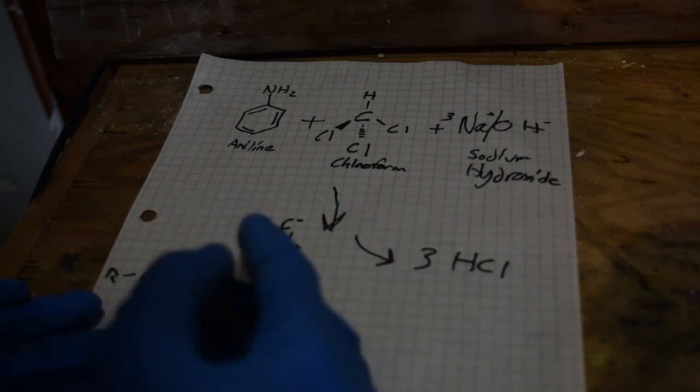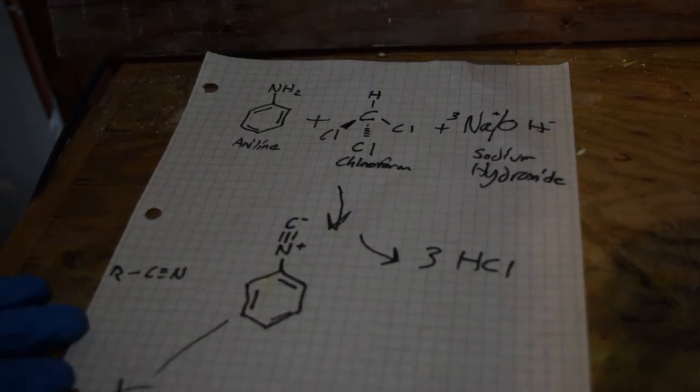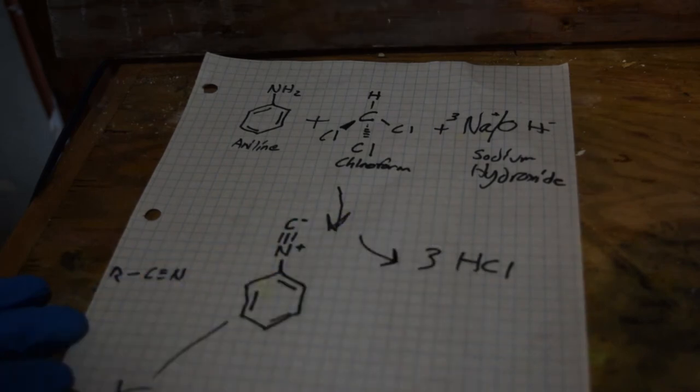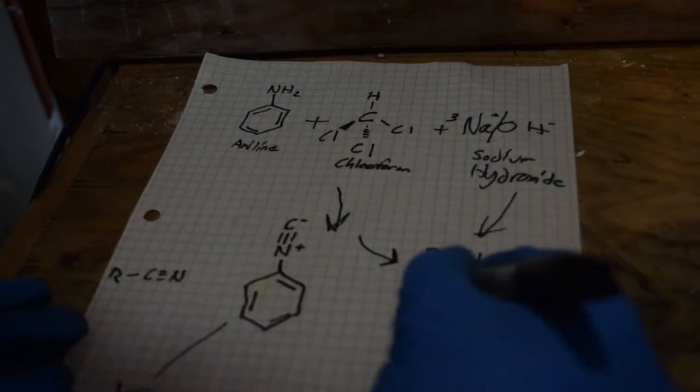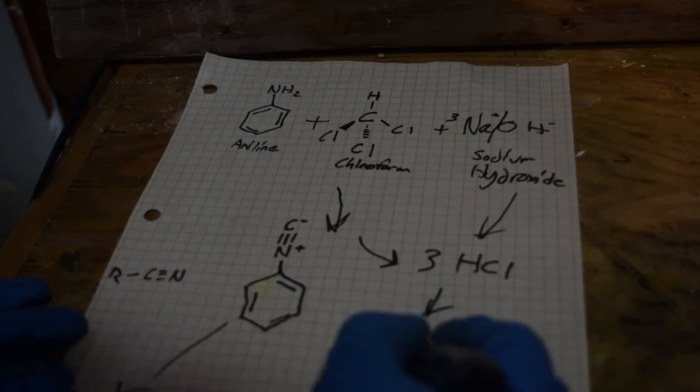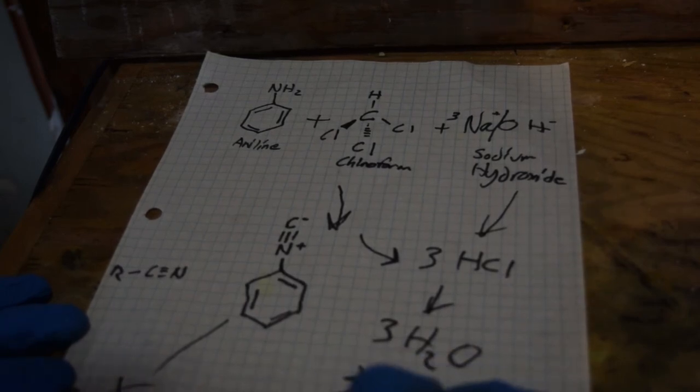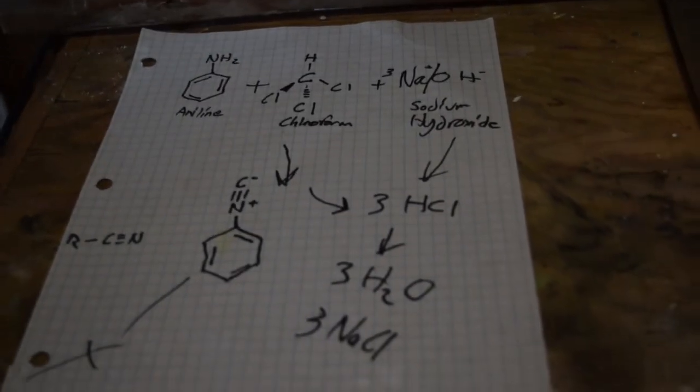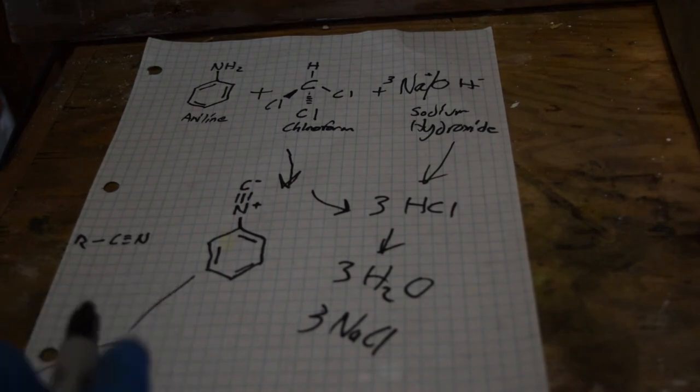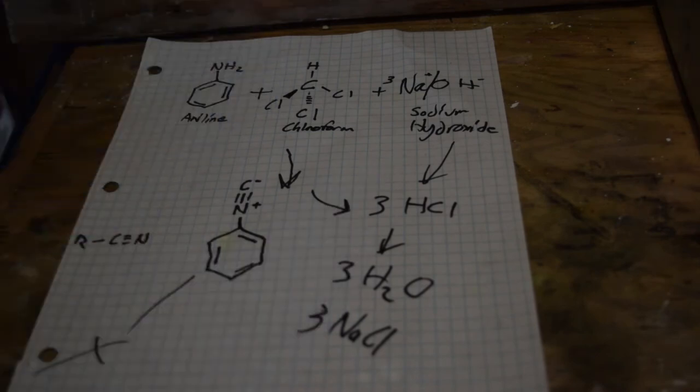So anyway, back to the reaction. This isn't the only thing that's formed, we're also forming three HCl. Now if this weren't to combine with or react with the phenyl isonitrile we'd get something else and that's not what we want. So to preserve the isonitrile, we're going to have to get rid of that HCl, and that's where the sodium hydroxide comes in. So the sodium hydroxide will react with the HCl to form three parts of water and three sodium chloride which will dissolve. The sodium chloride nor the water will affect this reaction in any major way. So we now get a solution of phenyl isonitrile, water and sodium chloride, with possibly some excess sodium hydroxide and ethanol, and that's going to be really stinky.